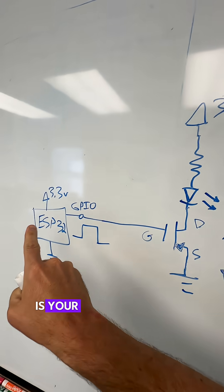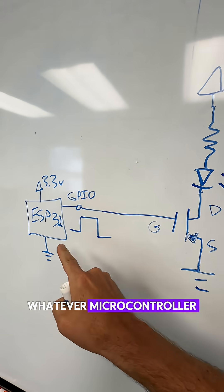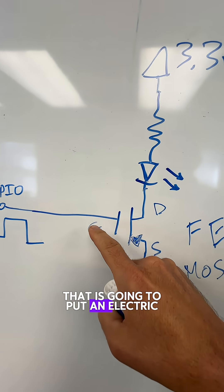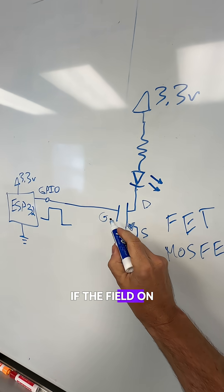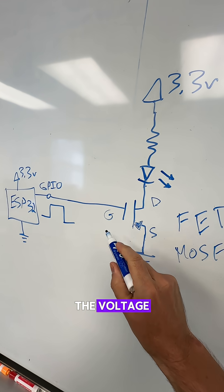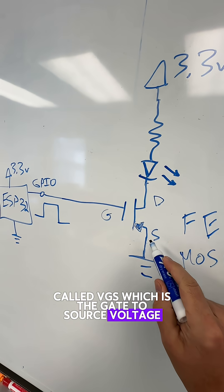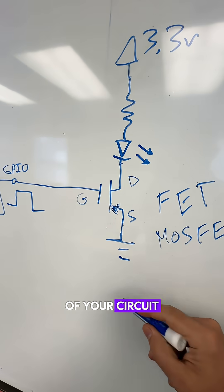So the way this works, again, is your ESP32, for example, whatever microcontroller is going to give it a pulse relative to ground. That is going to put an electric field on the gate. If the field on that gate is greater than the voltage in the datasheet for this part, called VGS, which is the gate to source voltage, then this will turn on turning on the rest of your circuit.